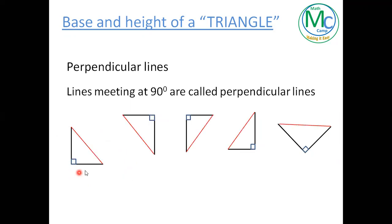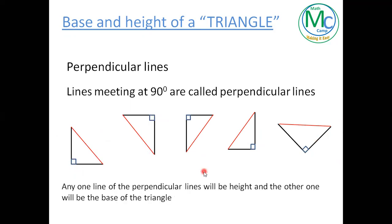So here we have right-angled triangles. Once we have figured out perpendicular lines, then it's super easy to find out height and base. Keep in mind, one of the perpendicular lines will work as height and the other one will work as base. It's totally up to you which side you want to take as height and which side you want to take as base.